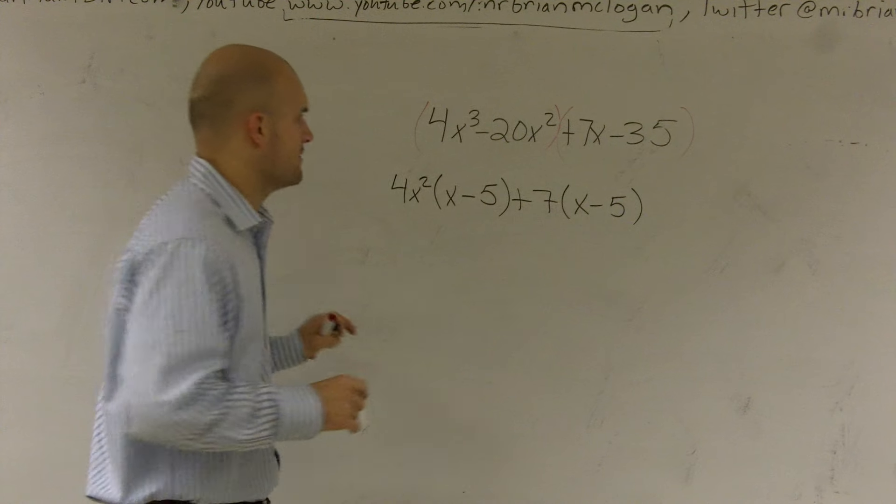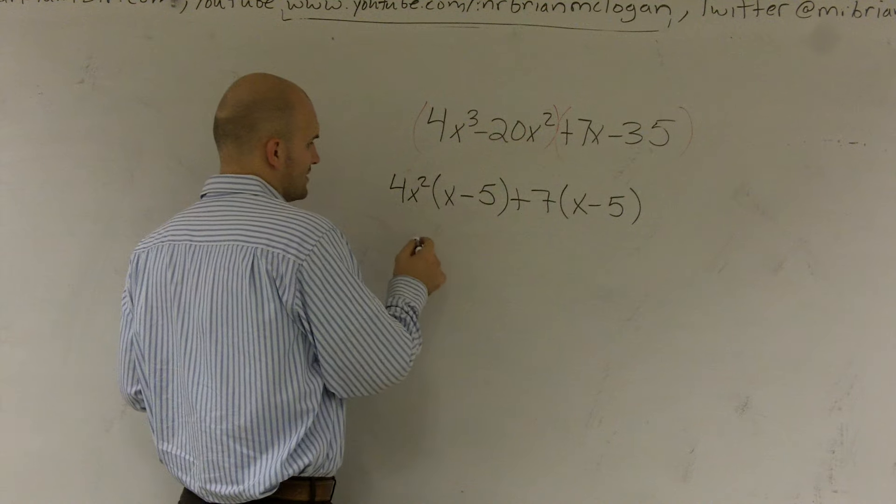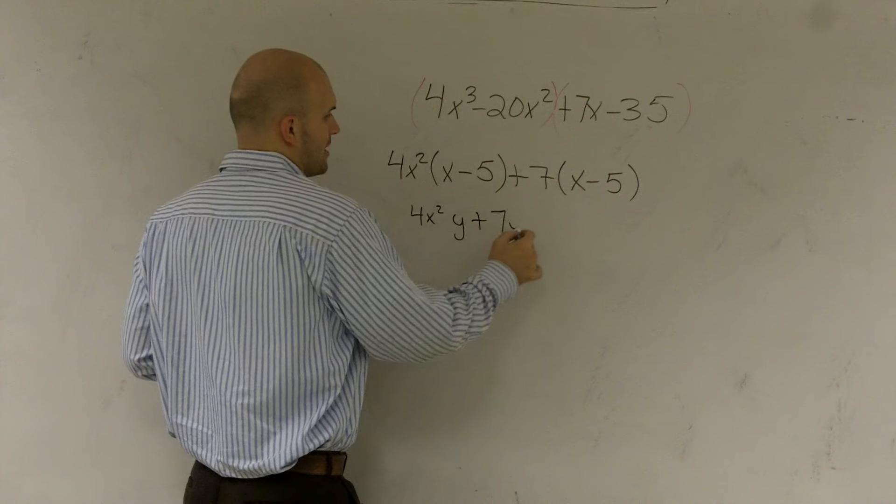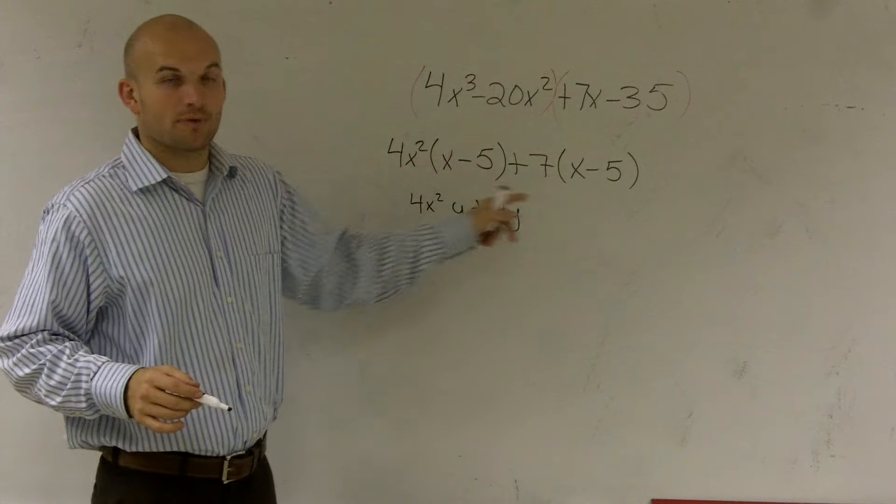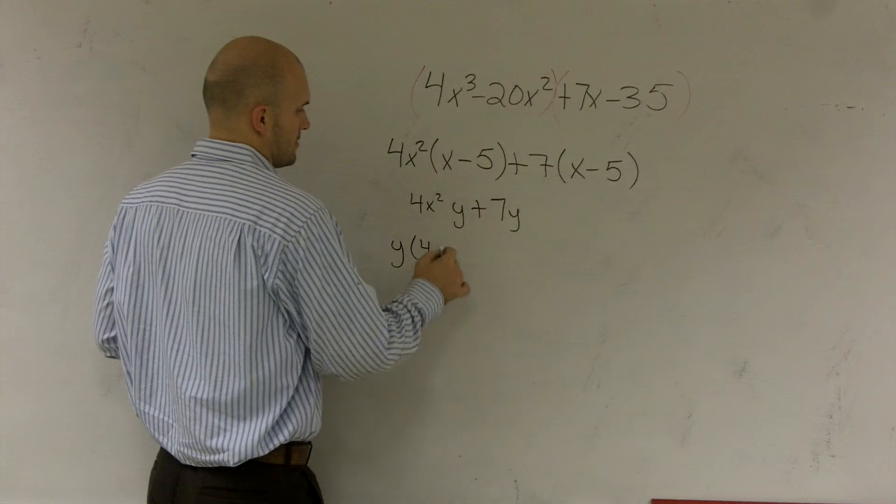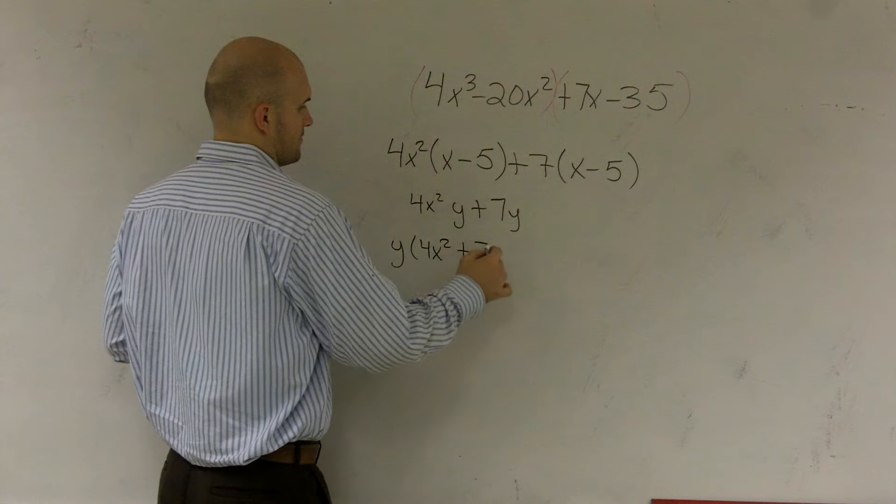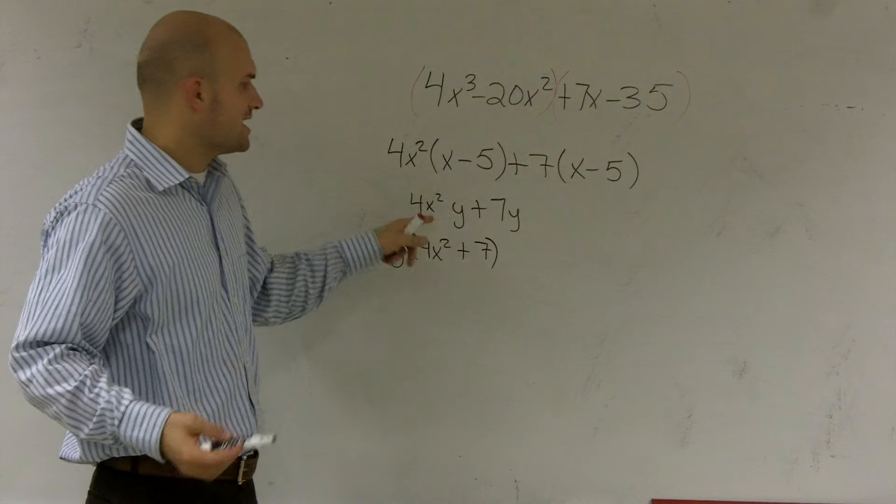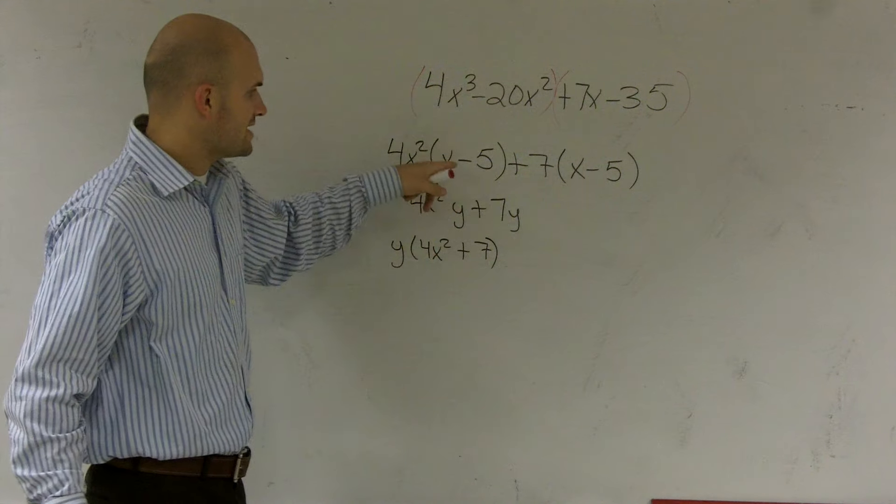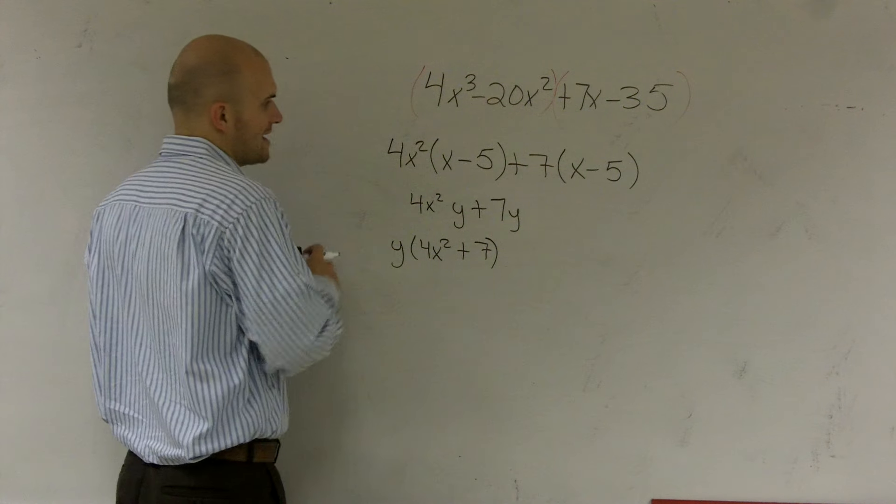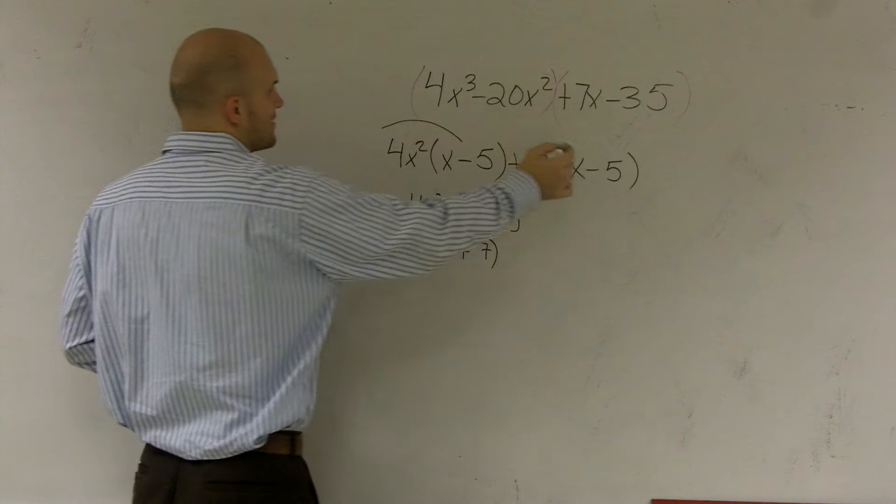Now, here comes the big transition for a lot of students. A lot of students can do this. And if you guys remember, if I was just going to say, let's just make this 4x squared y plus 7y. Now, you guys will notice that they both share a y, and you can factor out a y, right? You guys understand I can pull out a y. Well, instead of using a y, we're going to say an x minus 5.